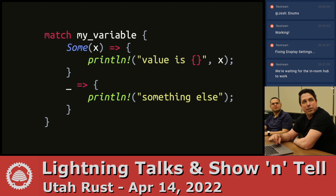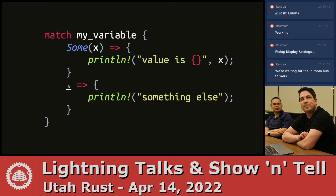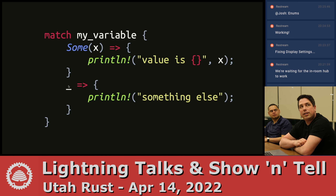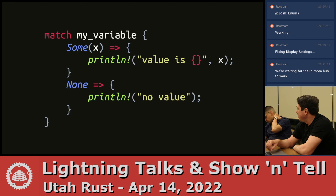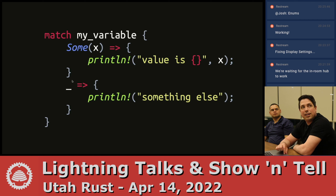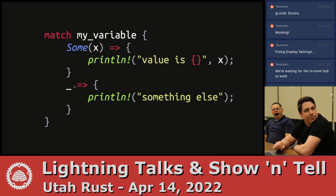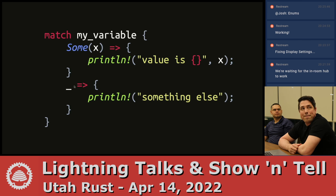Here's your wildcard syntax: if you put an underscore, that's a pattern that matches anything. So if it's not a some, it will hit this wildcard. An important thing about matches is they're exhaustive. If you had an enum with ten variants, you need to list every variant as part of the match statement, unless you have this underscore — which means I acknowledge there are other variants, match anything for this case.